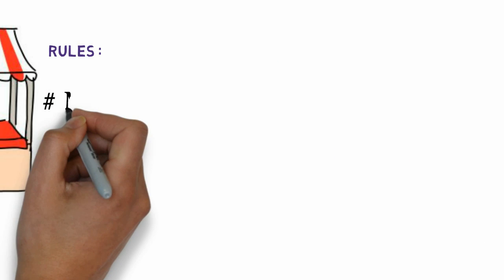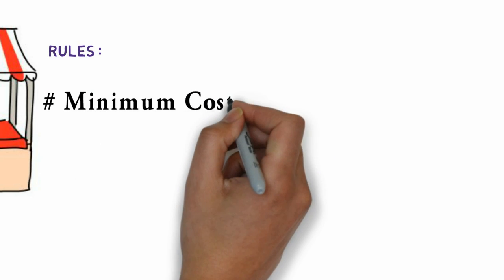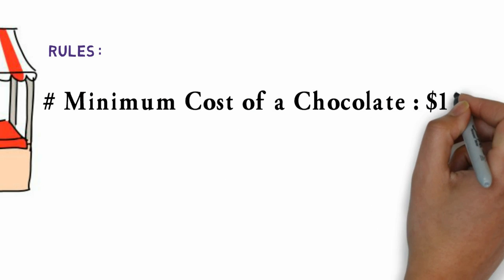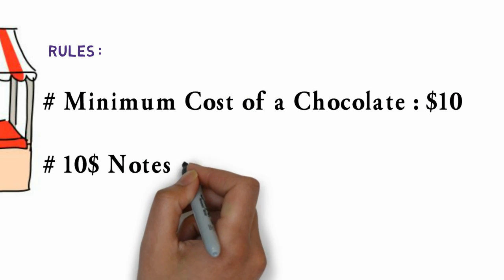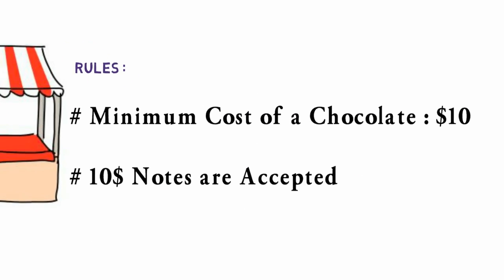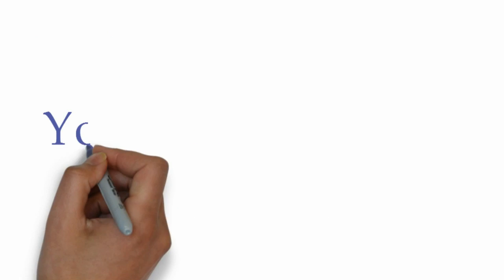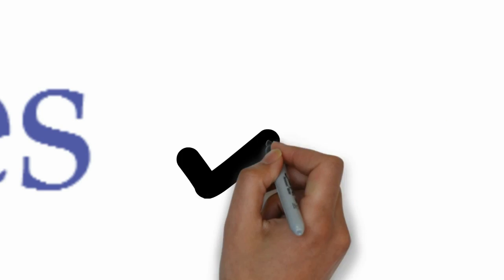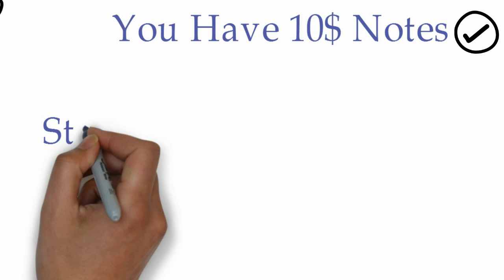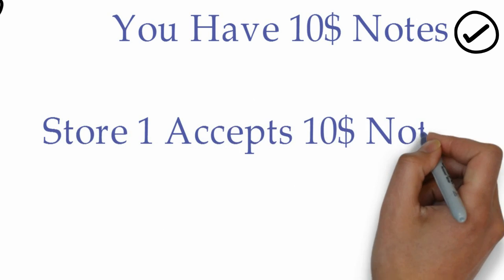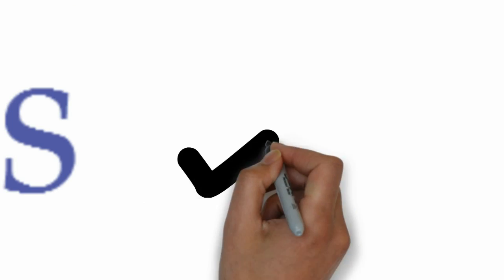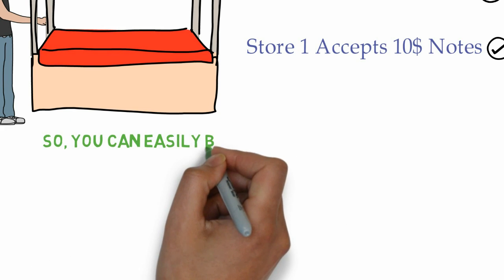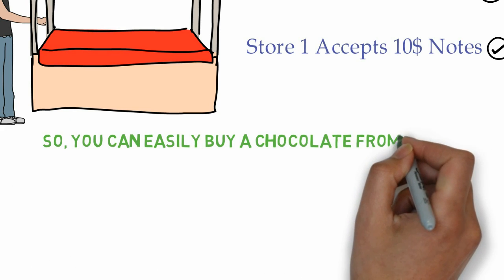The rules of Store 1 are: the minimum cost of a chocolate is $10, and $10 notes are accepted in Store 1. Luckily, you have $10 which are acceptable in Store 1, so it is possible for you to buy a chocolate from Store 1.